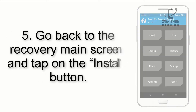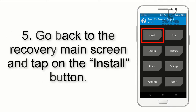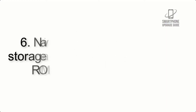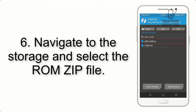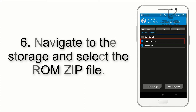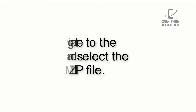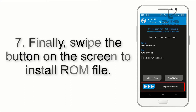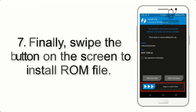Step 5: Go back to the recovery main screen and tap on the Install button. Step 6: Navigate to the storage and select the ROM ZIP file. Step 7: Finally, swipe the button on the screen to install the ROM.